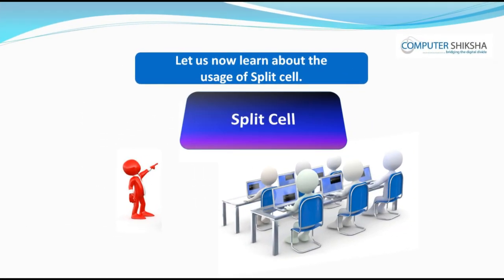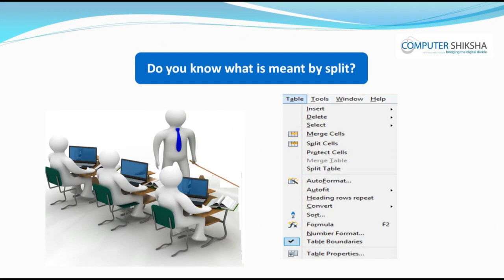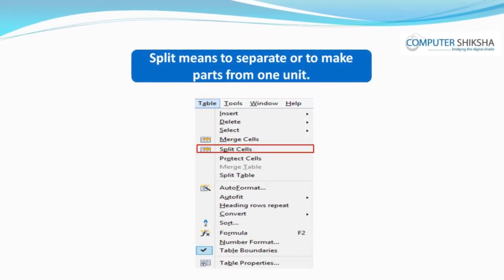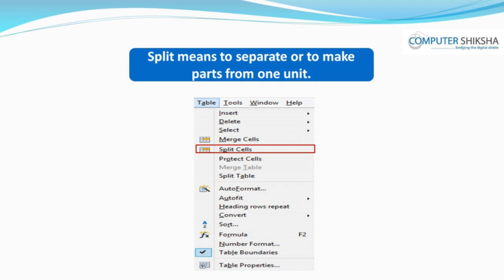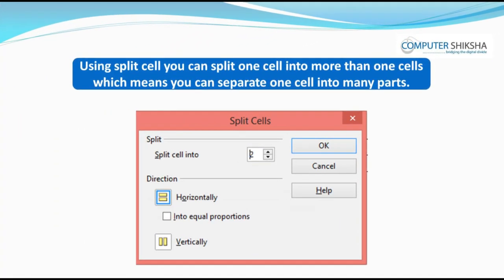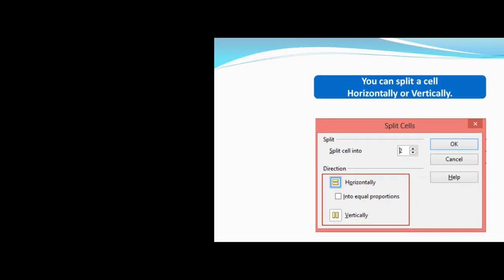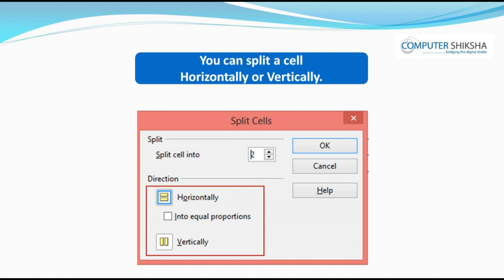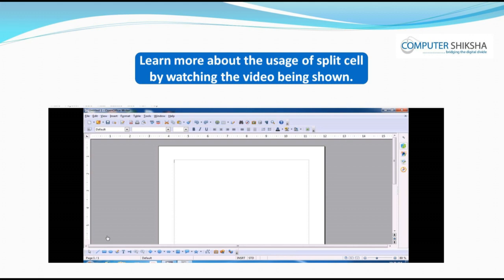Let us now learn about the usage of split cell. Do you know what is meant by split? Split means to separate or to make parts from one unit. Using split cell, you can split one cell into more than one cell, which means you can separate one cell into many parts. You can split a cell horizontally or vertically. Learn more by watching the video.